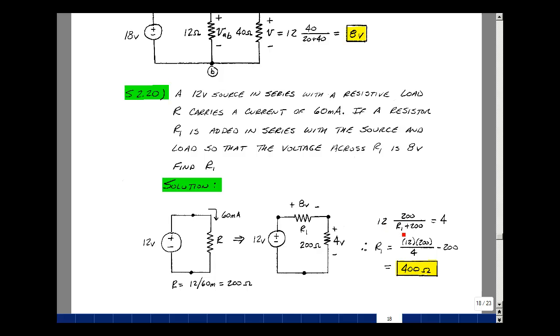So I have 12 times 200. Rearranging the equation and moving terms, the product of 12 times 200 divided by 4 is the same as 3 times 200, which is 600 minus 200, which equals 400 ohms. And that's supplemental problem 220.